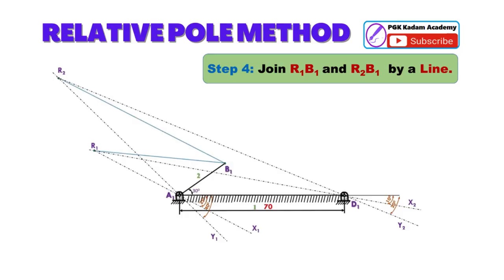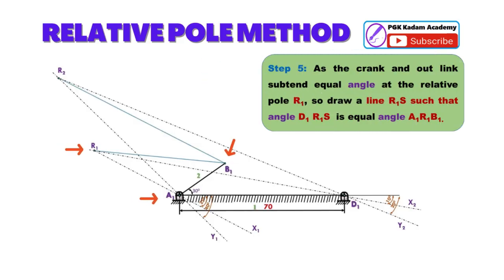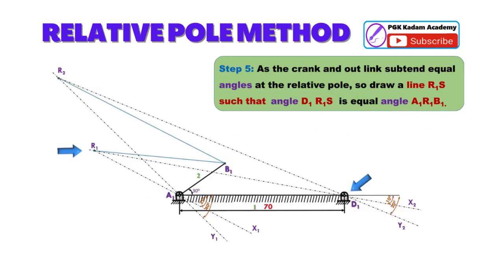Step 4: Join relative pole R1 and point B1. Also, join relative pole R2 and point B1 by a line as shown in the figure.